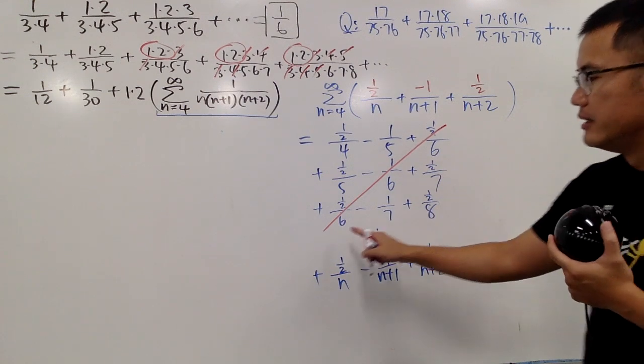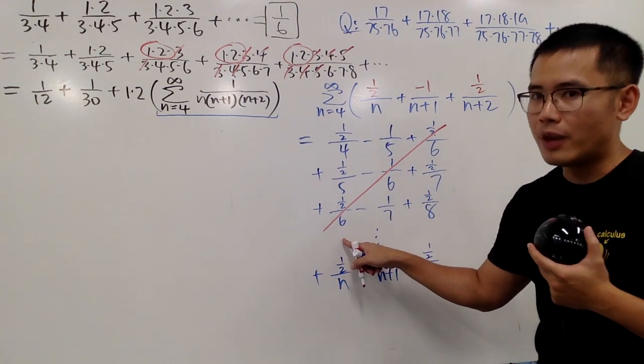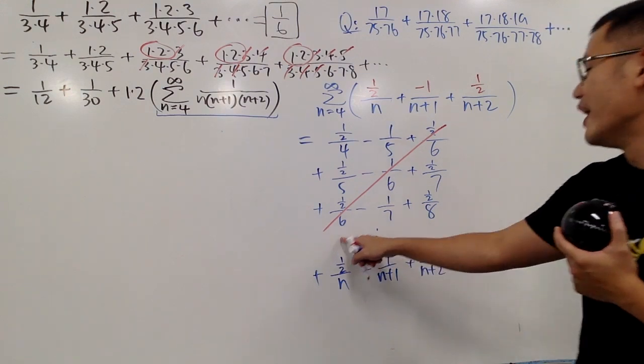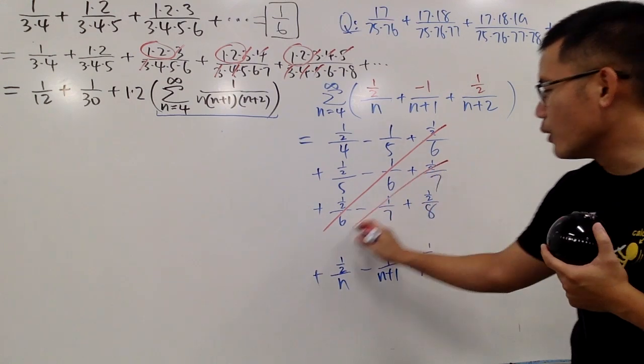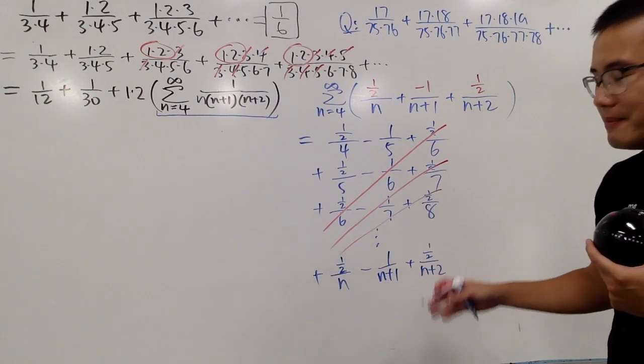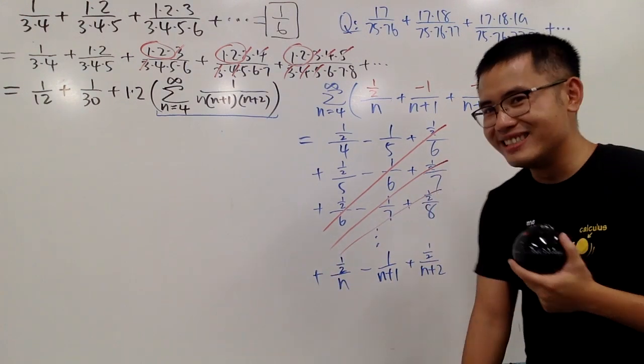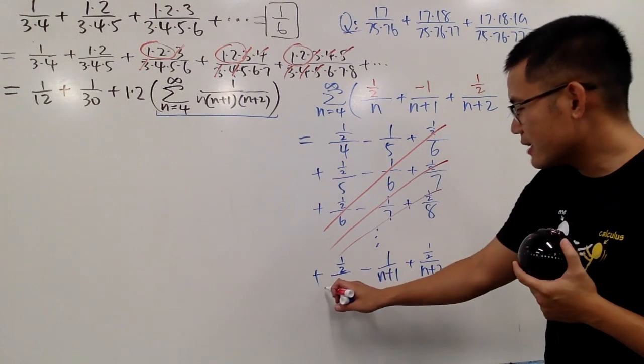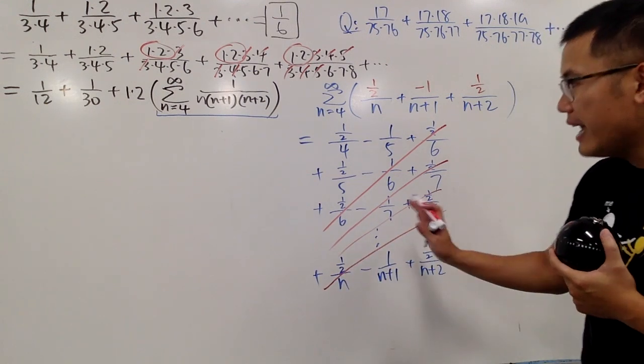Likewise, one half over seven, this right here, it will also have been one over two over seven, and then minus one over seven, they will also go to zero. You can cancel the diagonals like this. And in fact, this is going to be cancelled out as well.